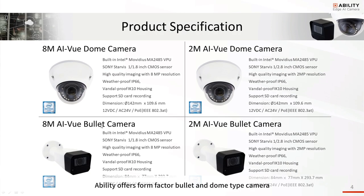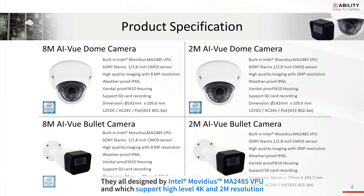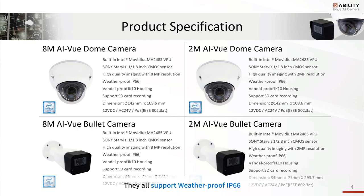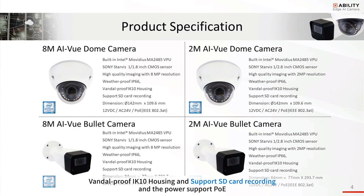Ability offers bullet and dome type cameras. They are powered by Intel Movidius MX8248 VPU and support up to 4K and 2-megapixel resolution. They all support weatherproof IP66 and vandal-proof IK10 housing, support SD card recording, and power over Ethernet.